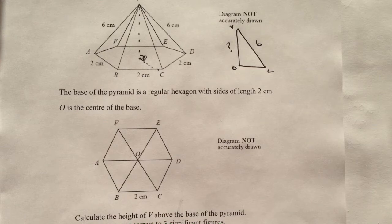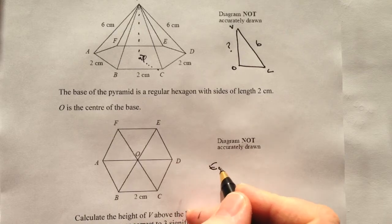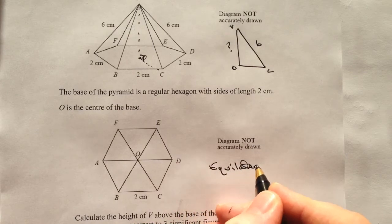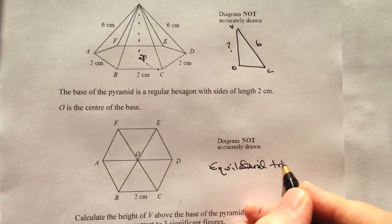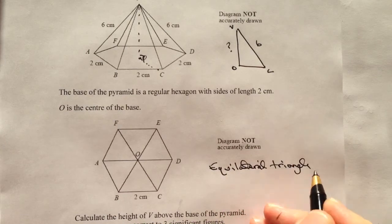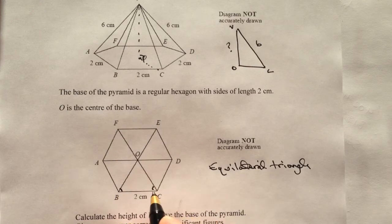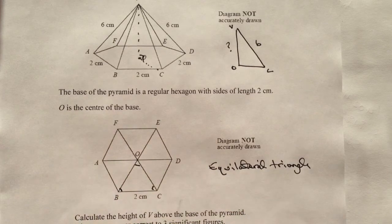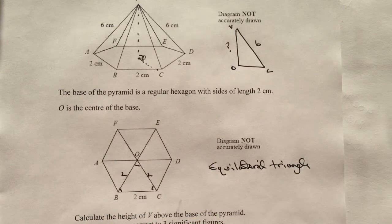Well the biggest clue with all of this is that each of those is actually an equilateral triangle. Now if it's an equilateral triangle, then it just means that each of the angles in here are the same and also importantly for us each of the sides are the same. So this is also 2 centimetres and 2 centimetres.